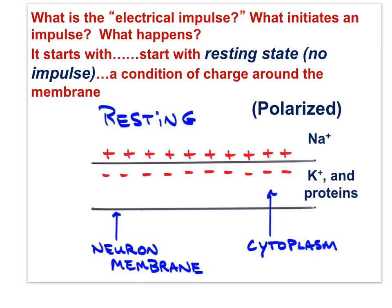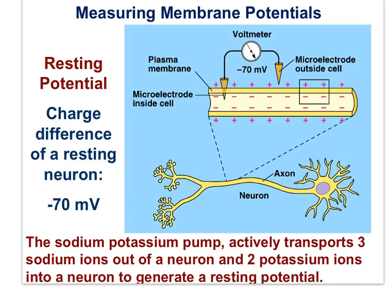There is electrical potential here — an energy potential — because these opposite charges attract. The positive and negative charges, separated as they are, are ready to rush towards each other. This is the resting state, or the resting potential, a high potential energy condition. The polarized state, the resting potential, comes as a result of the sodium-potassium pump, which actively transports three sodium ions out of a neuron and two potassium ions in to generate the resting potential.